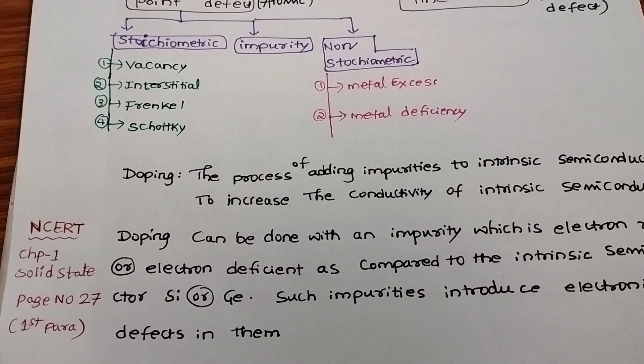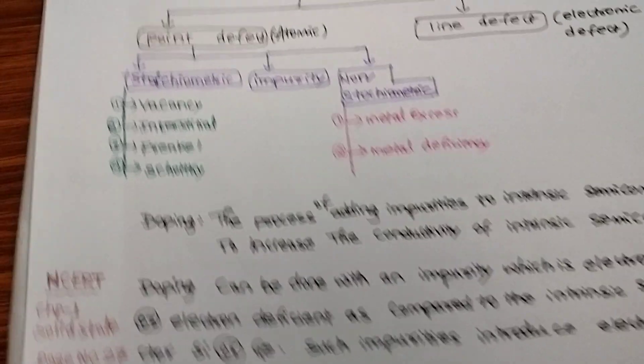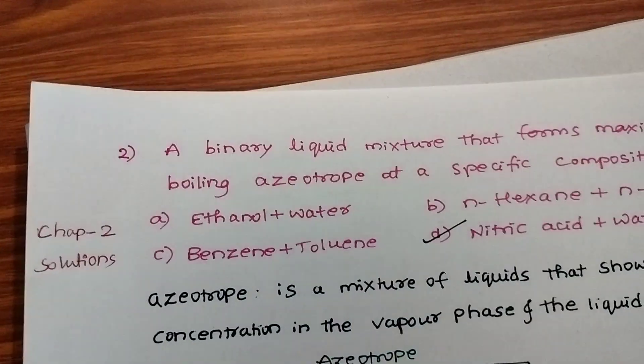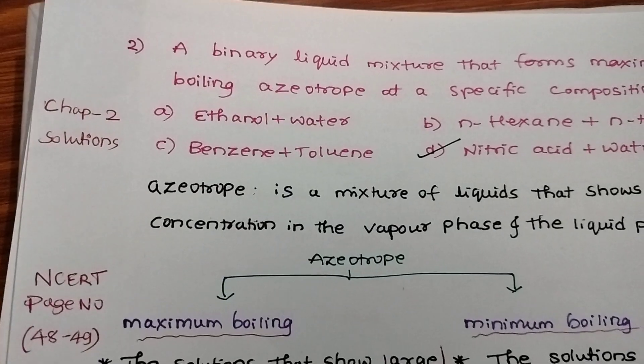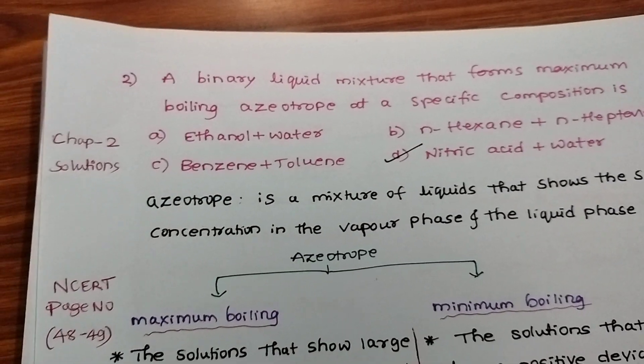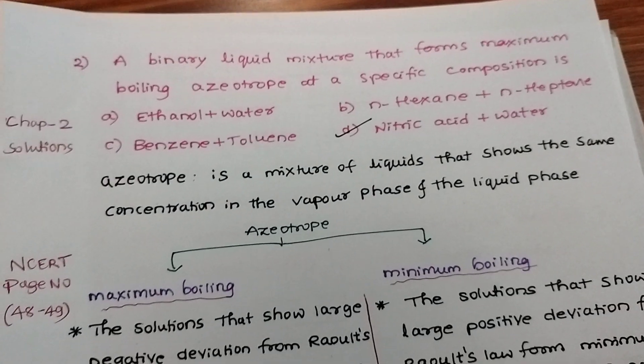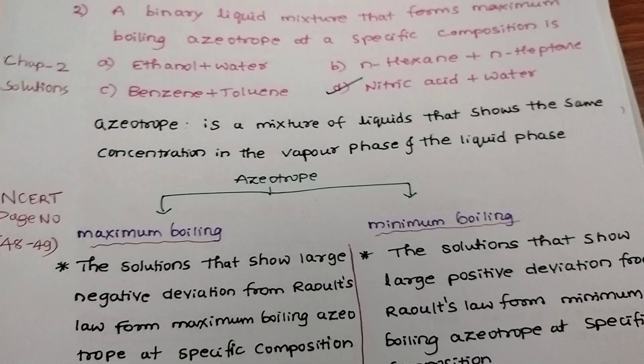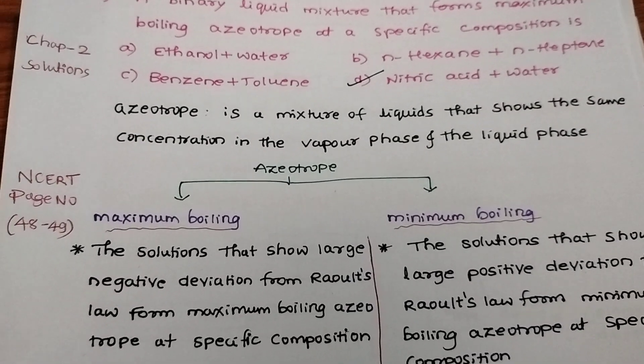You can see page number 27. Next question: a binary liquid mixture that forms maximum boiling azeotrope at a specific composition. For this, nitric acid plus water is the answer.